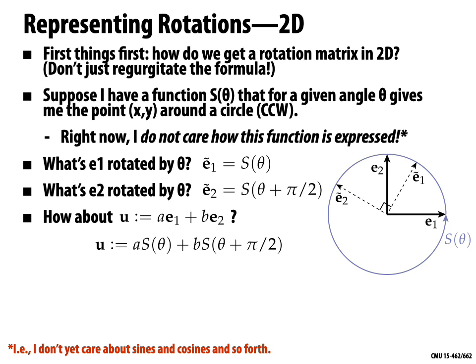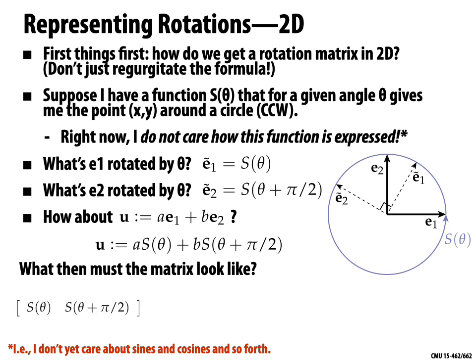So what must the matrix look like that takes a vector (a, b) to the vector rotated by θ? The columns of the matrix must be equal to S(θ) and S(θ + π/2), because the columns tell us what happened to the basis vectors E1 and E2. Now we can write out the matrix in terms of sines and cosines: S(θ) = (cos θ, sin θ), and applying simplification, cos(θ + π/2) = −sin θ and sin(θ + π/2) = cos θ.